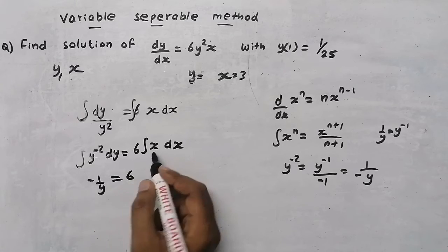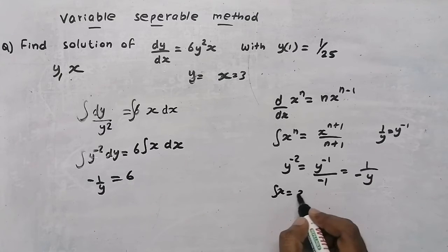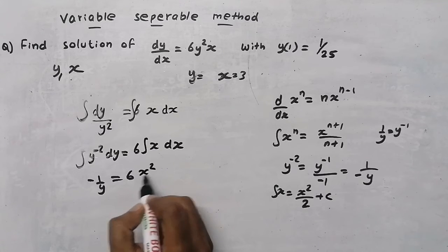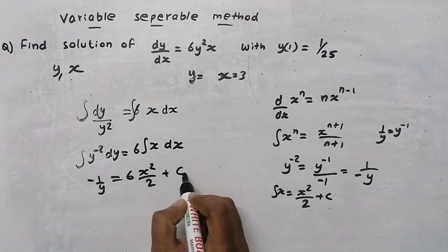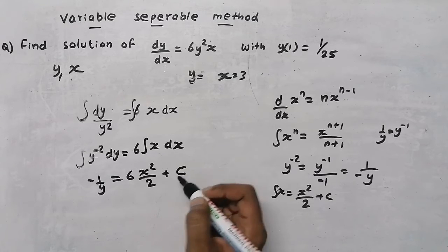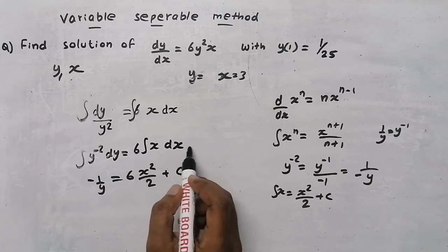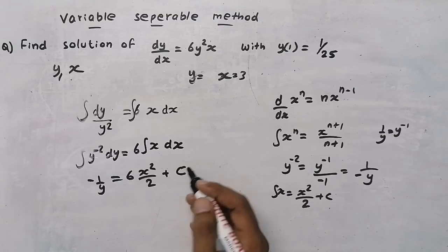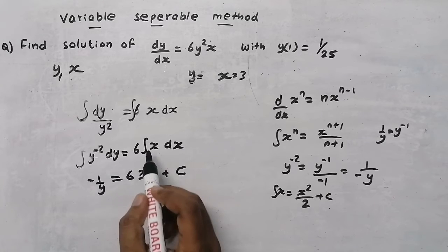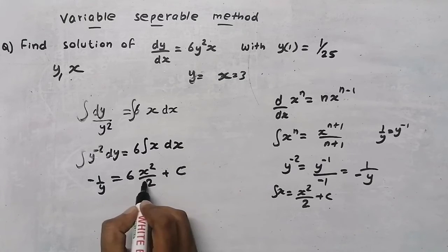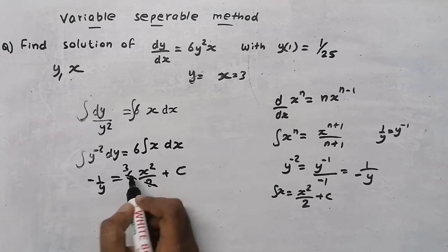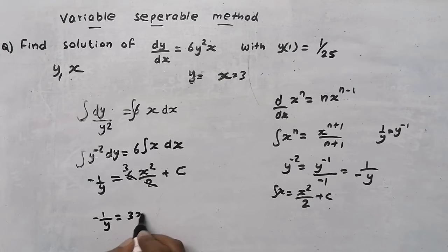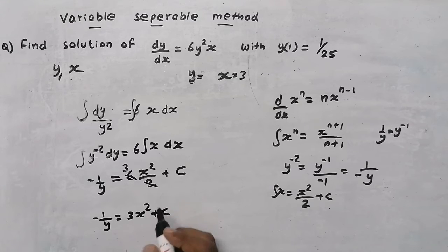On the right side, 6 times the integral of x dx equals 6 times x squared by 2 plus c, where c is the integration constant. The 2 and 6 cancel to give 3. So the result so far is: minus 1 by y equals 3x squared plus c.